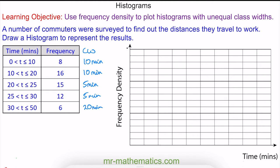Because we have an unequal class width, we need to show the frequency as an area rather than a height like we would normally do in a bar chart. The area will be made up of the width, which is measured in time, and the height, which is measured in frequency density.